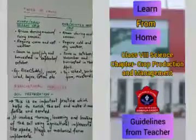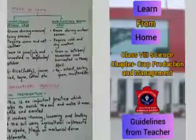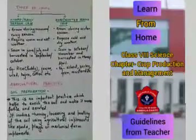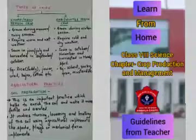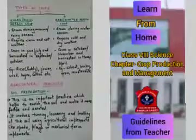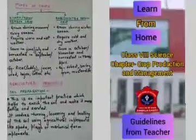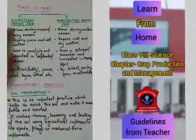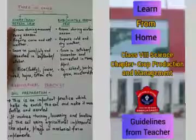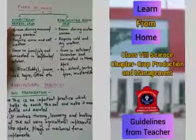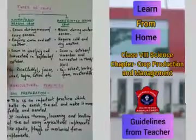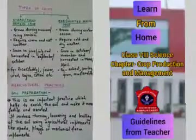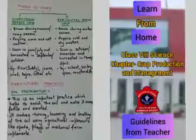Now let's discuss the various types of crops. There are basically two types: kharif, that is the rainy season crop, and rabi, that is the winter season crop.